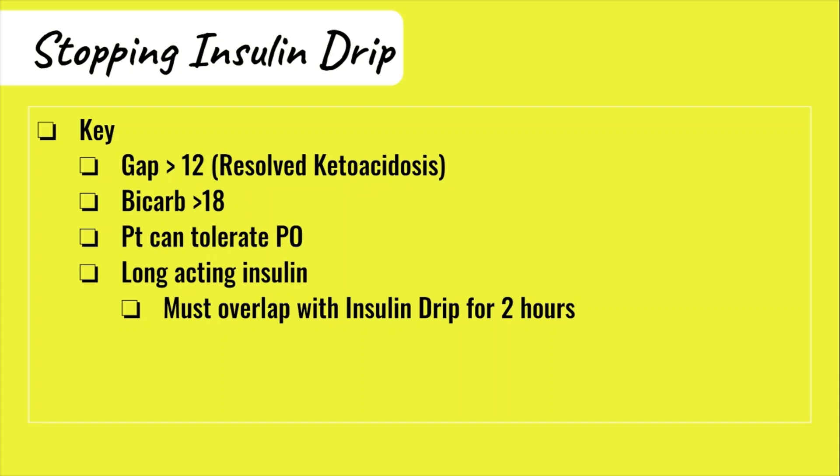When do we stop the insulin drip? A few key things need to happen: the gap needs to be less than 12, indicating resolution of the ketoacidosis. The bicarb needs to be above 18, because if it's not, your patient could very easily go back into metabolic acidosis. And the patient must be able to tolerate PO — meaning they can eat. When the drip is going to be stopped, a long-acting insulin must be ordered and given two hours prior to stopping the insulin drip, so it has enough time to start working and you don't cold turkey your patient from insulin.